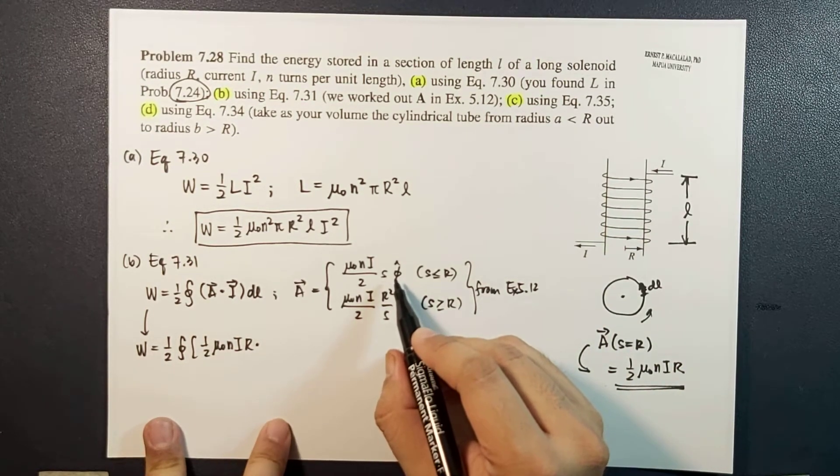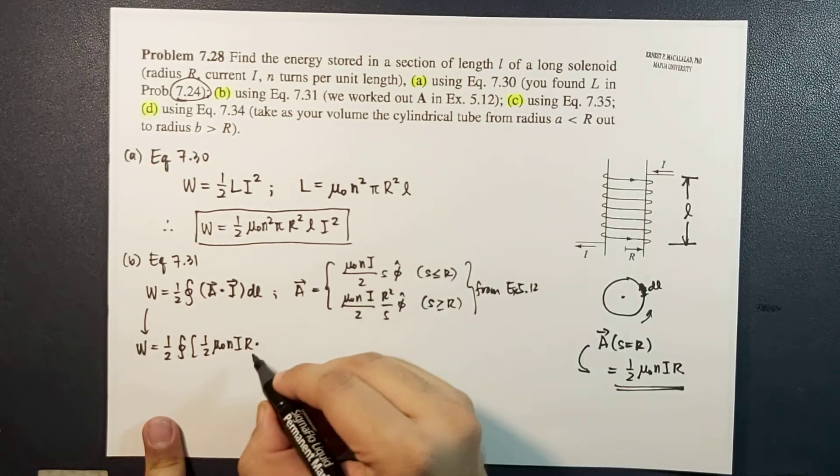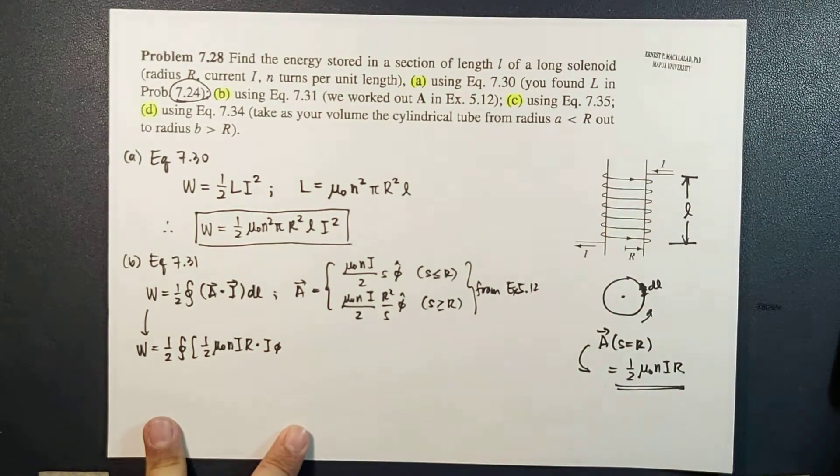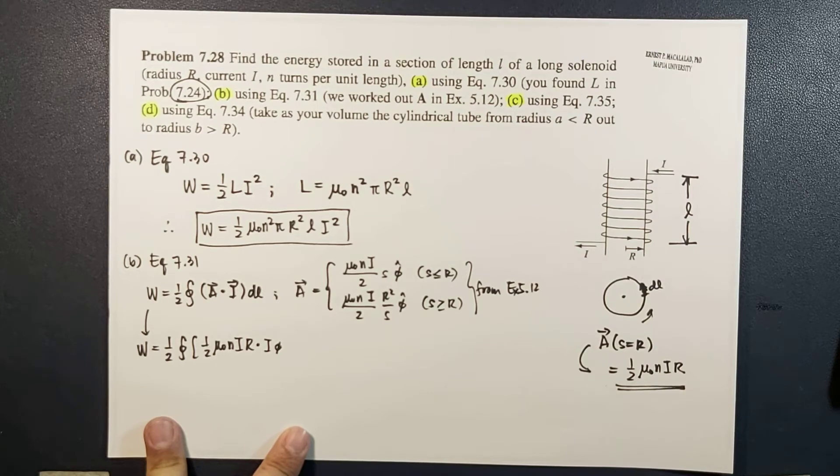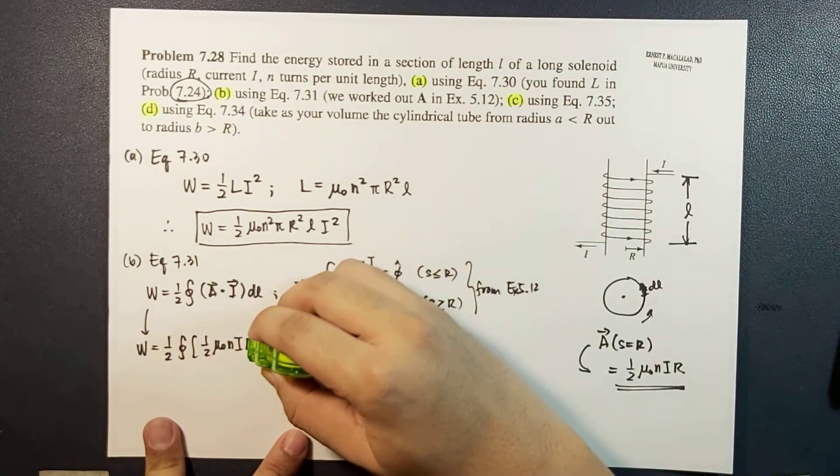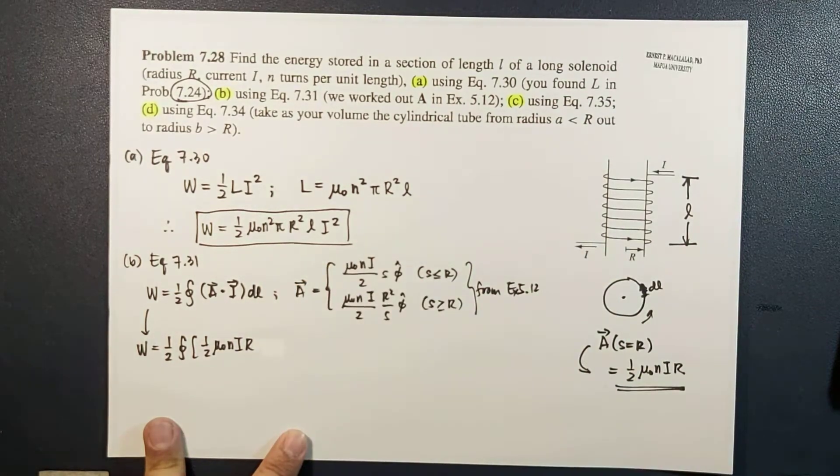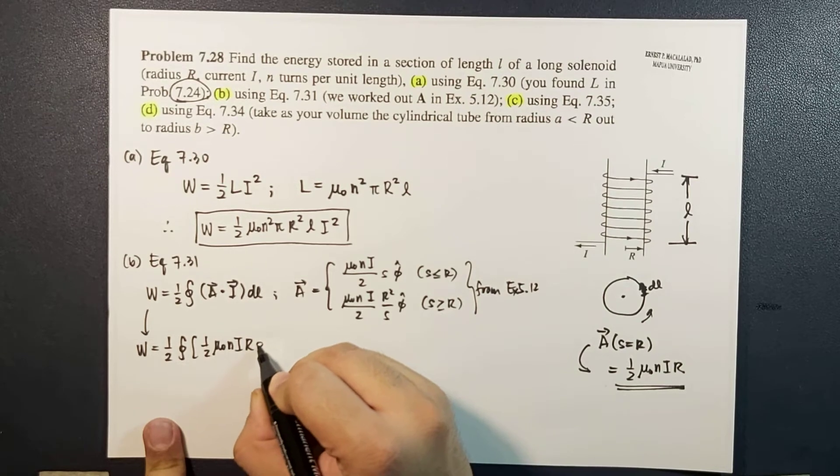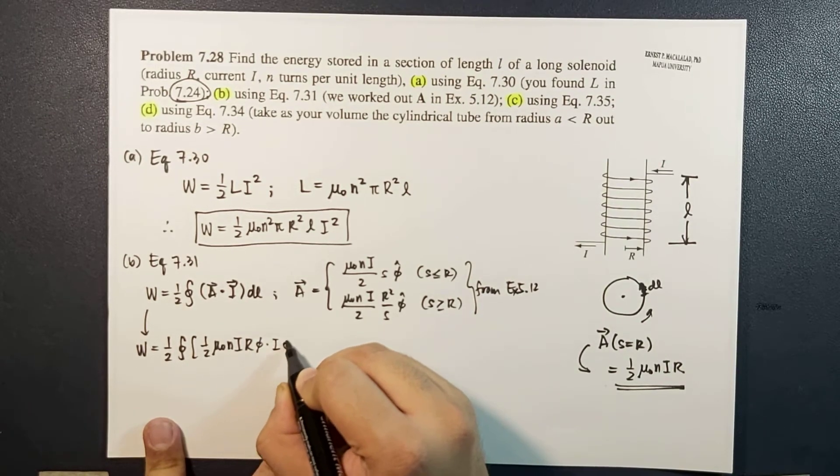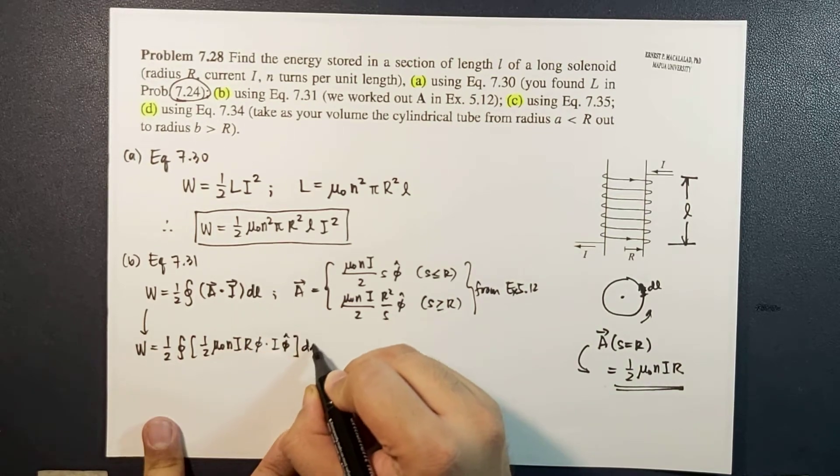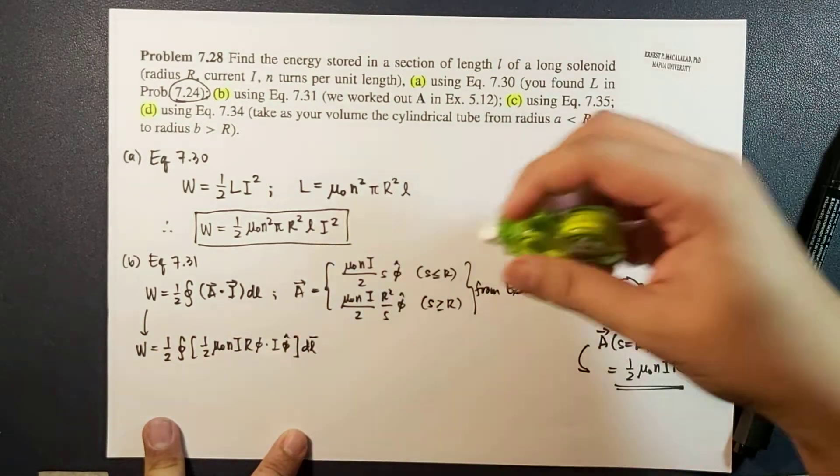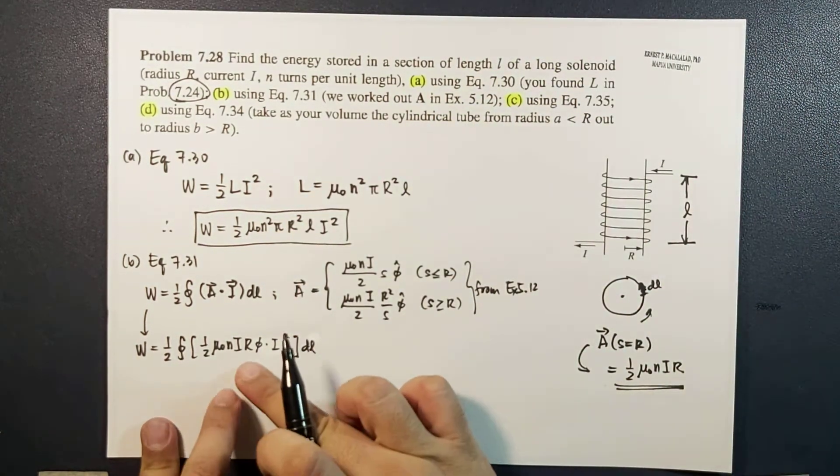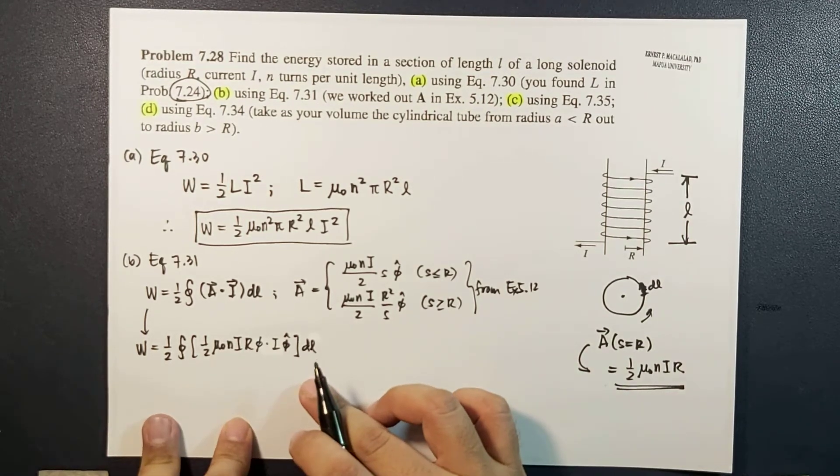We are using cylindrical coordinate system here, so we could dot this with i φ̂. Sorry, this should be a vector, so A should be φ̂, then we dot it with i φ̂. Sorry, this is not a vector.